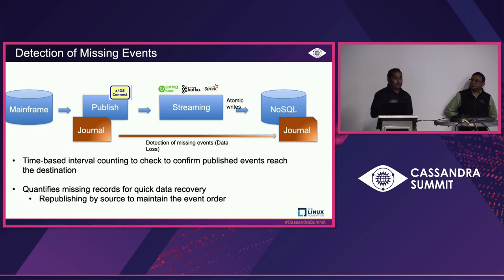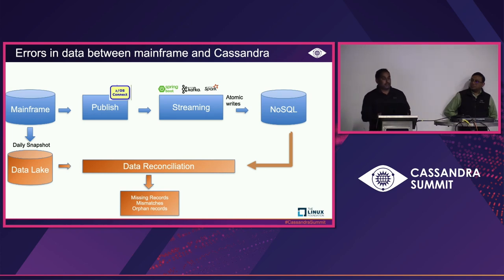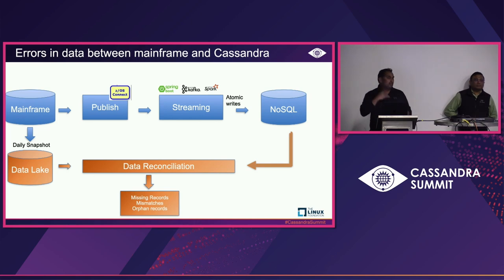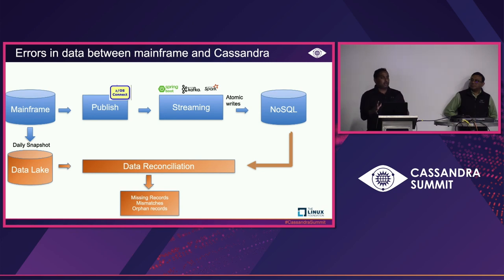Now, if you look carefully at the architecture, there's an arrow between mainframe and publish. When you change an address, the mainframe itself might never publish that data to the streaming engine. Data loss monitoring won't catch that because no event was ever published. That's where data reconciliation comes in. This is a capability — a product, one of the transformations in the software platform we built — where you can plug it into your pipe to verify data between two systems.